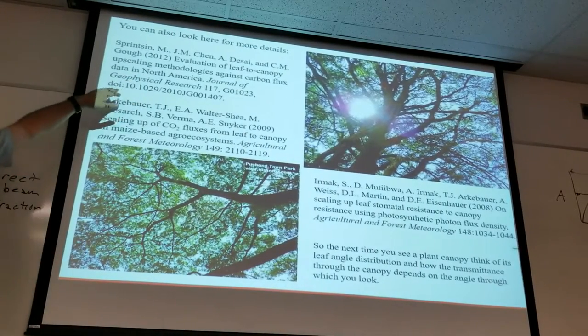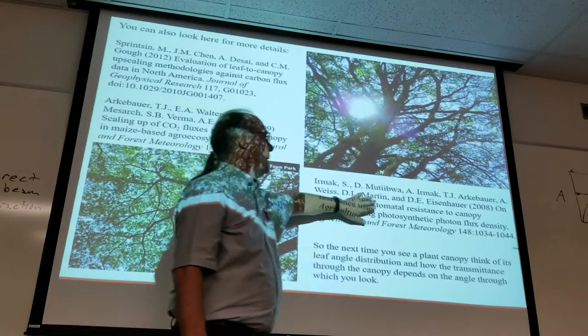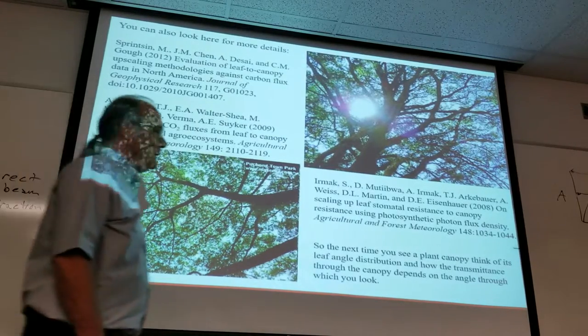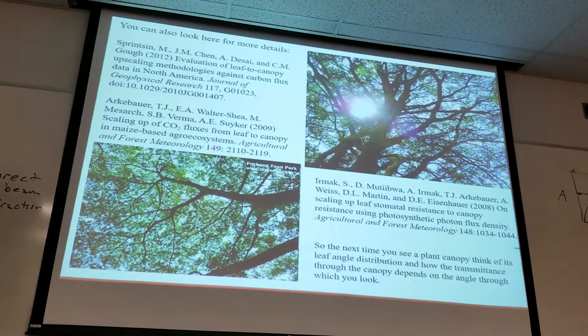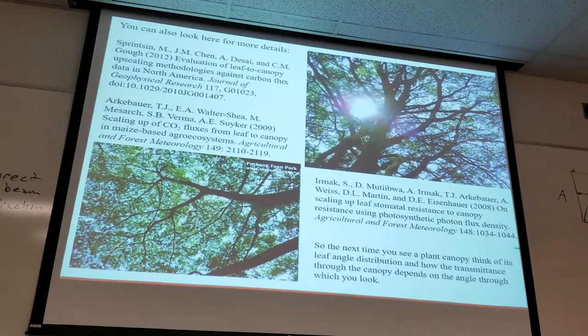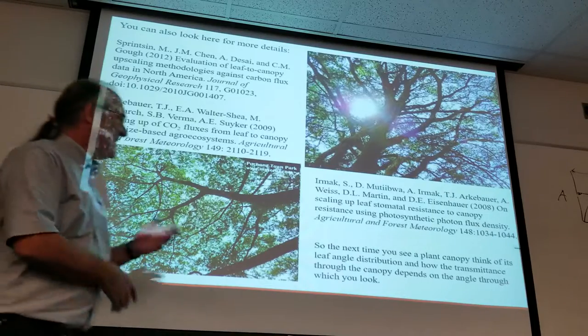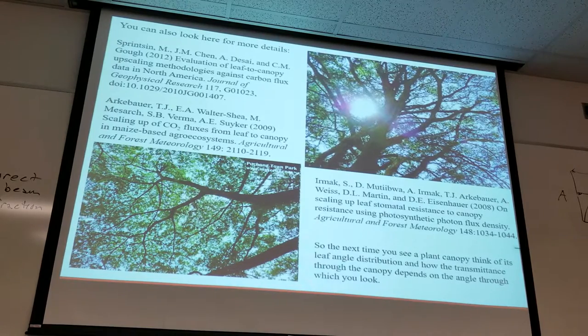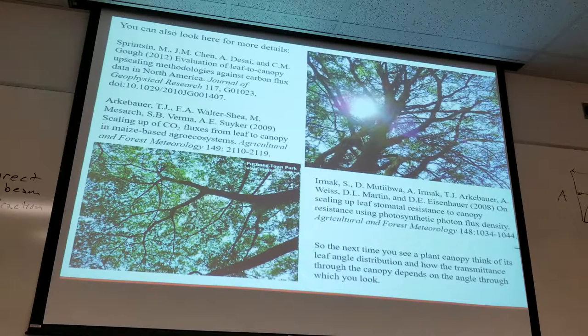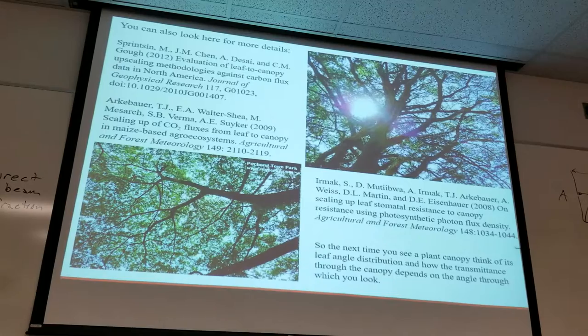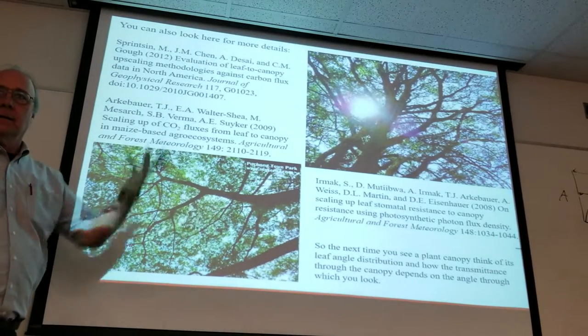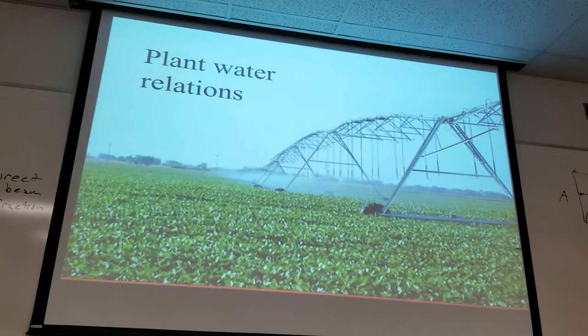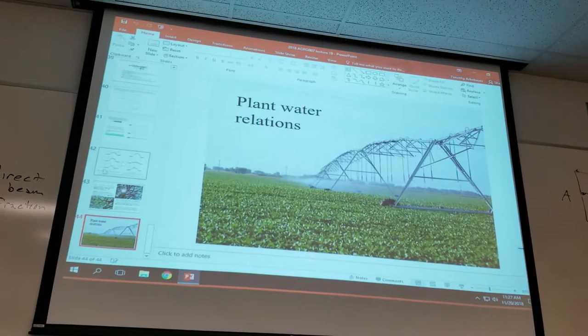More details, here's the paper that we published based on that work. Here's a nice overview of leaf-to-canopy scaling techniques. And Sue Ott had students that were interested in this idea too and used it to scale up leaf stomatal resistance to canopy resistance. Here's a publication here. So I say next time you see a plant canopy, think of its leaf angle distribution. I told you this last time, right? Over Thanksgiving maybe you'll see something and then think about how that transmittance depends on the angle that you're looking, because that transmittance affects how sunlight is utilized by plants, both in terms of fixing carbon and then losing water.